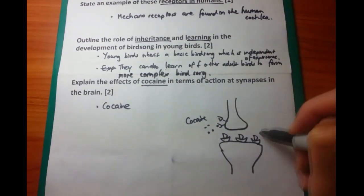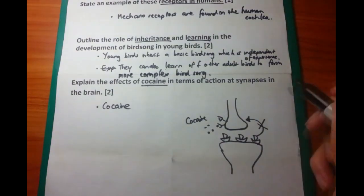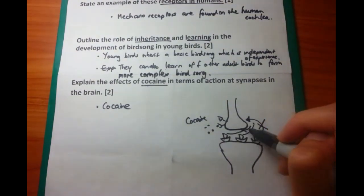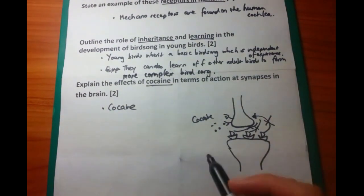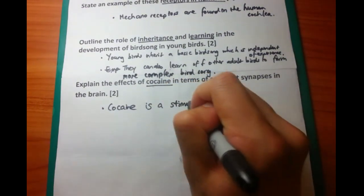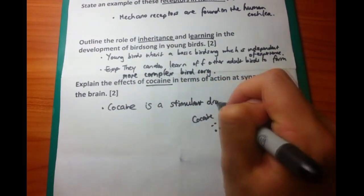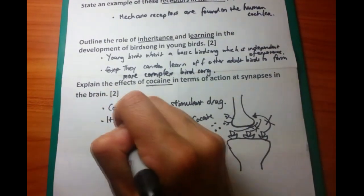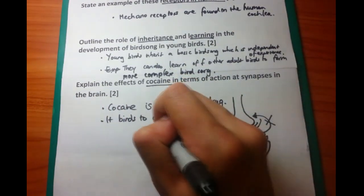And what the cocaine does is that it binds to receptors on the presynaptic membrane. Now if you remember, the acetylcholine, or the dopamine in this particular case, is reuptaken into the presynaptic membrane. And this causes a dissipation of the action potential.